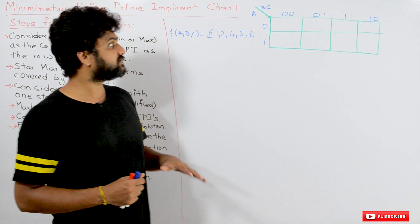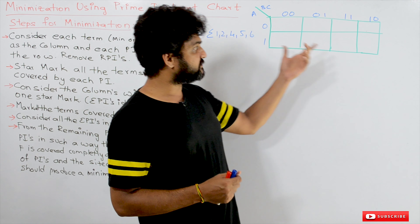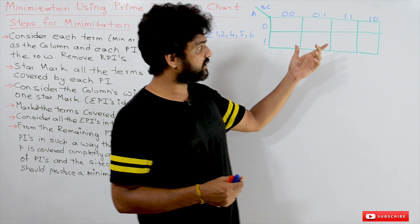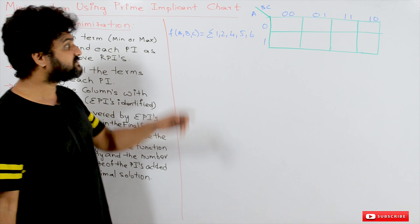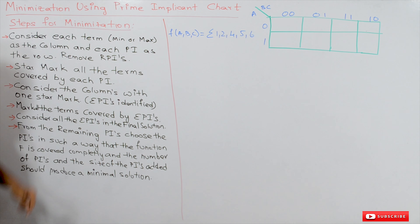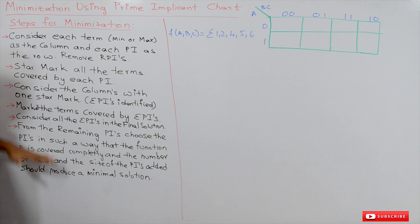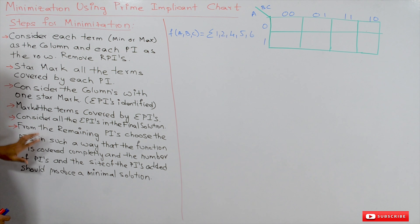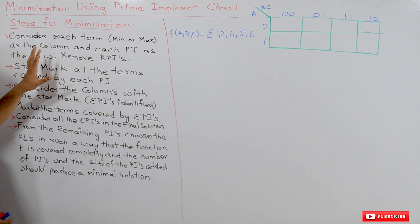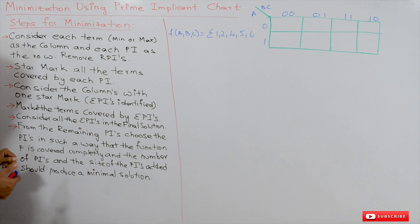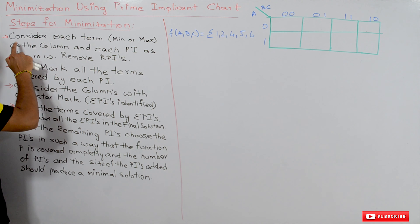Coming to this class, we will take an example and use it to minimize by using the prime implicant chart. These are the steps for minimization — we'll read them out first and then follow them using the example.